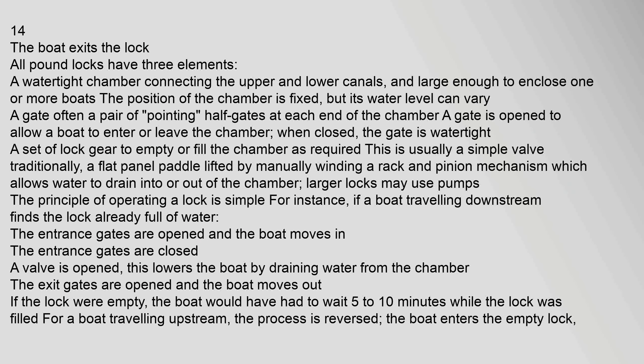All pound locks have three elements: a watertight chamber connecting the upper and lower canals, large enough to enclose one or more boats, with a variable water level; a gate — often a pair of pointing half gates — at each end; and a set of lock gear to empty or fill the chamber, usually a simple valve, traditionally a flat panel paddle lifted by manually winding a rack and pinion mechanism, which allows water to drain into or out of the chamber. Larger locks may use pumps.